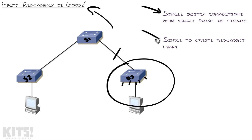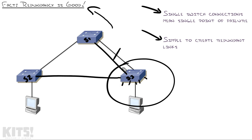The good news is that it's very simple to create redundant links. All I need to do is plug a cable like this, or a cable like that, or something like that to eliminate that single point of failure. But if I do that without Spanning Tree engaged, I can cause a loop that takes down the entire system.